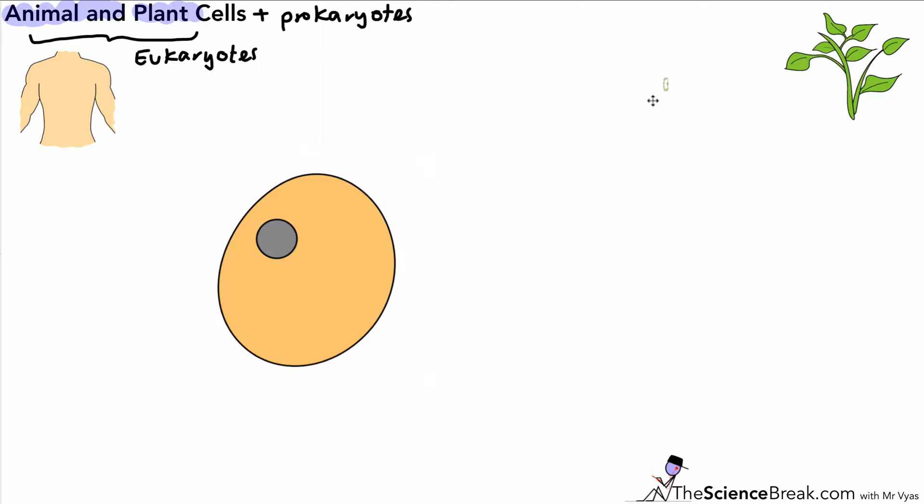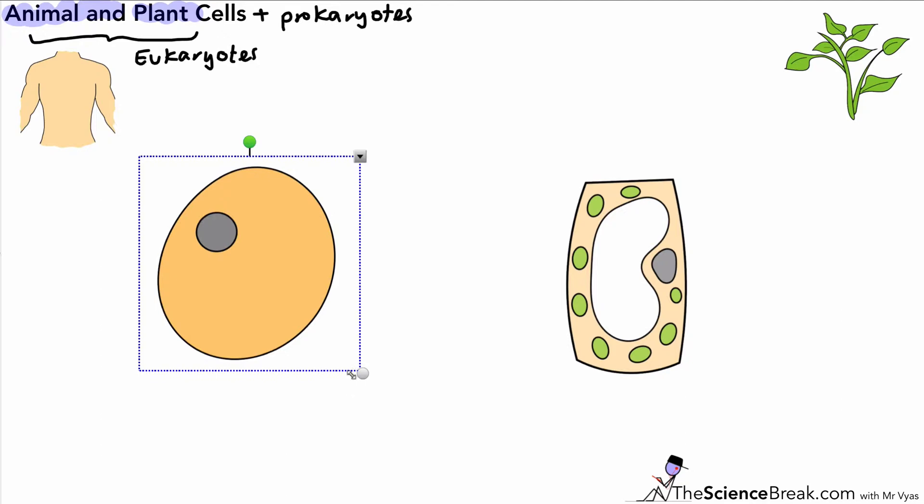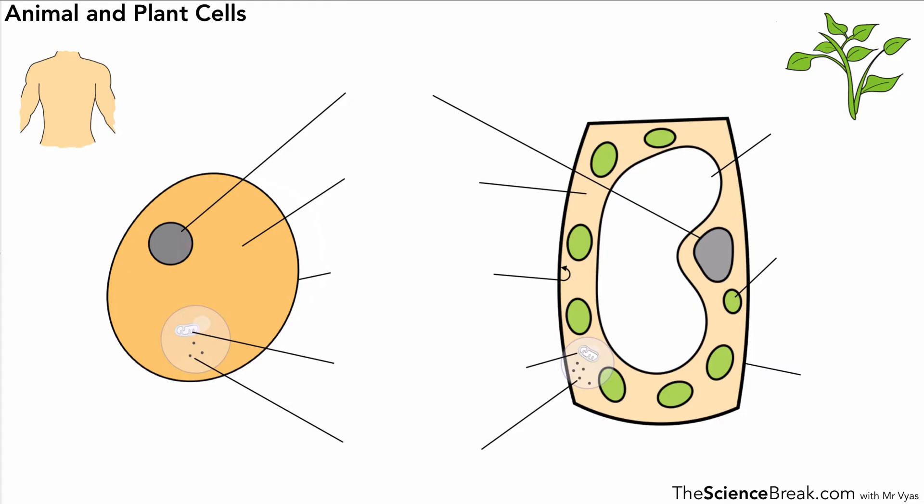Remember, cells are the basic unit of all living things. Here are our cells, and what we're going to do is label the different parts. You've probably done this before, but it's important that you know what all the different parts are and the function of those parts.